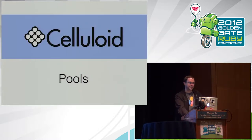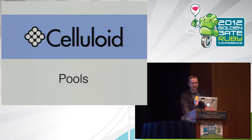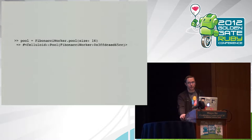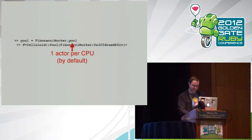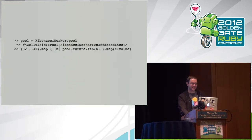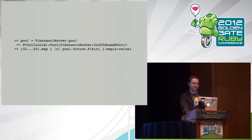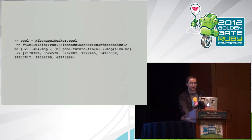The neatest feature of Celluloid is pools. Pools let you have a group of actors and you can schedule work inside of them. To create a pool, just call .pool on any class that includes Celluloid. You can give it a size if you want, or if you don't, it will automatically build a pool as big as the number of CPUs on your system — a nifty feature that certain other over-hyped concurrency technologies don't support. To do parallel computation, you can create a bunch of futures using map and then obtain their values by mapping across those futures, calculating all those Fibonacci numbers in parallel.